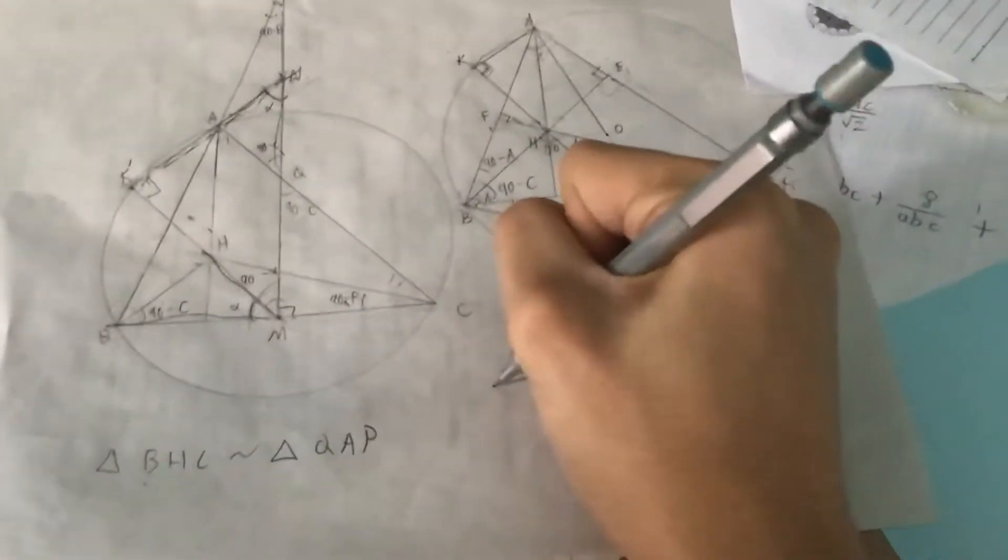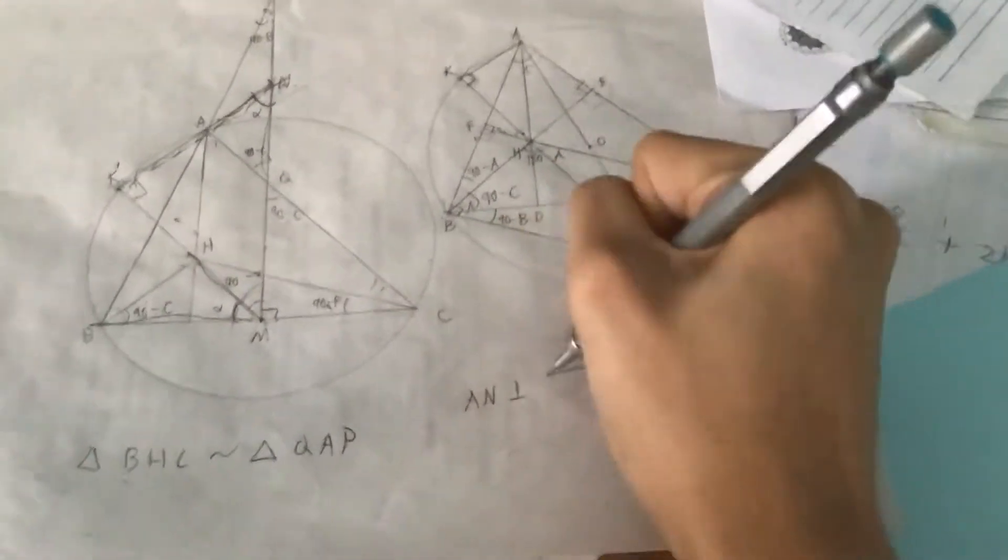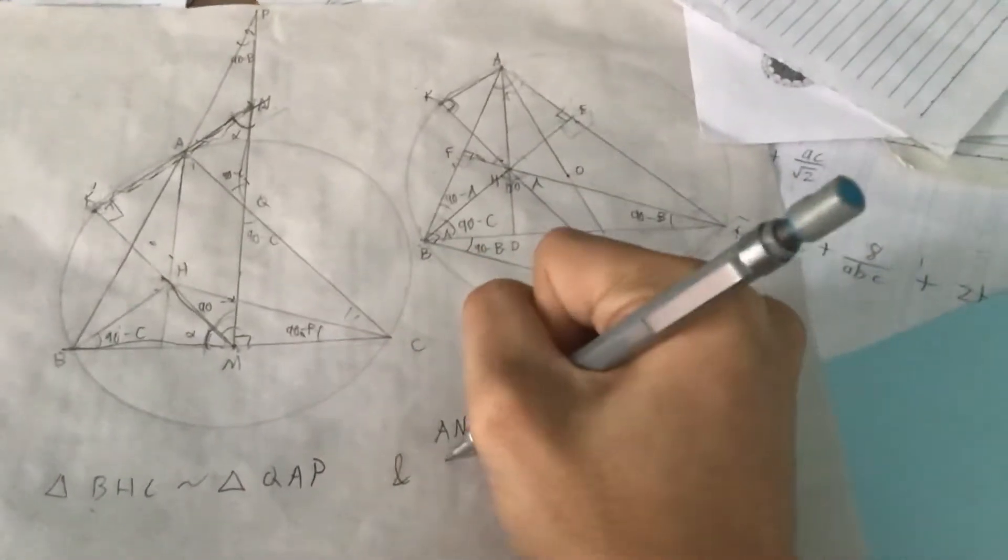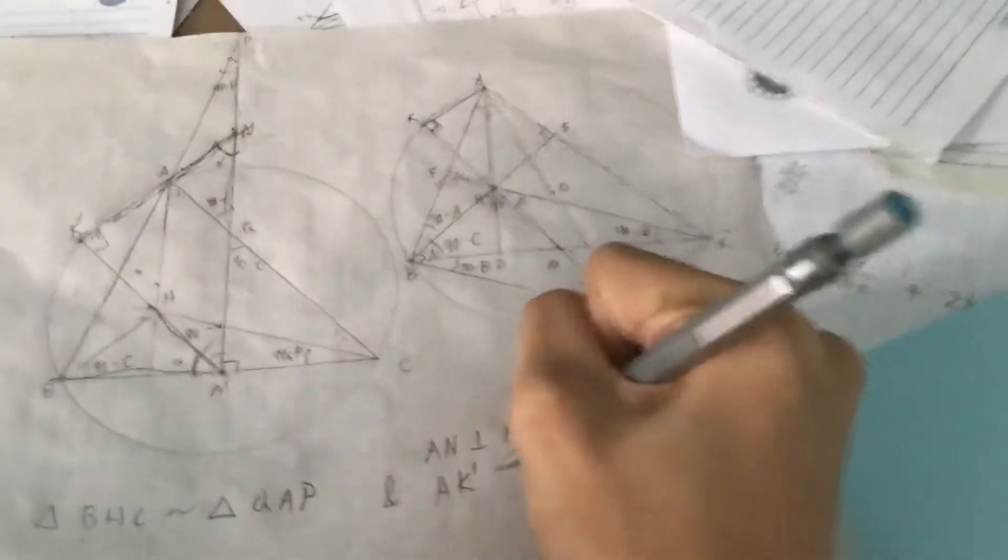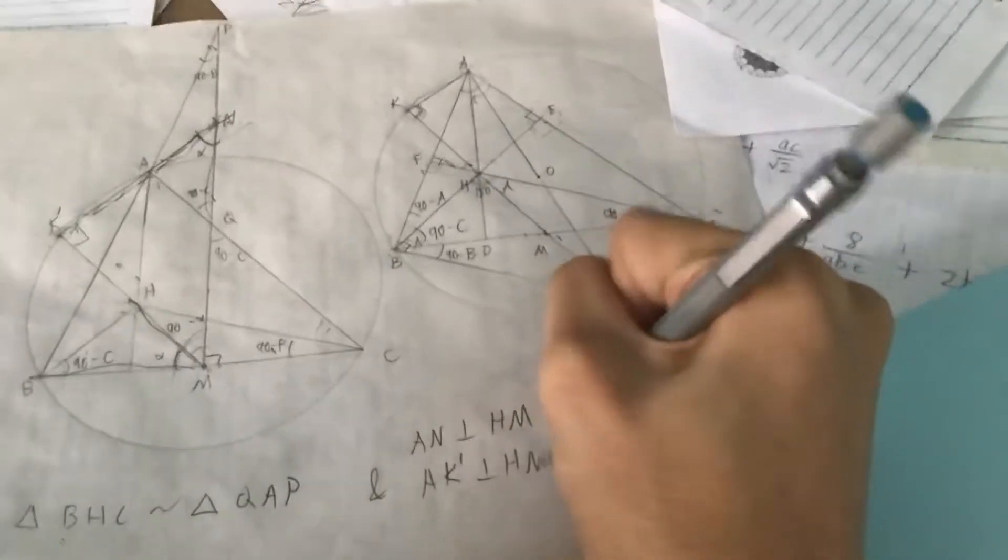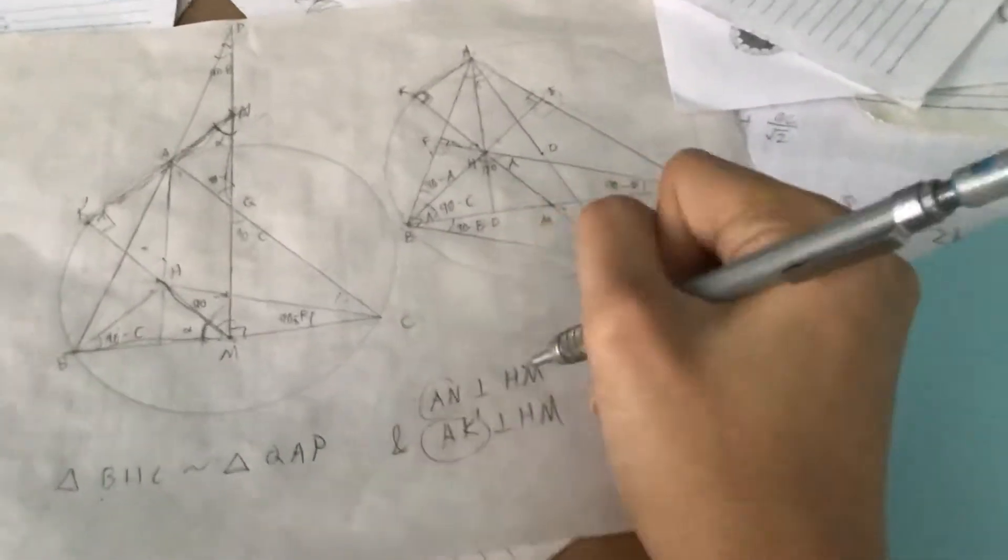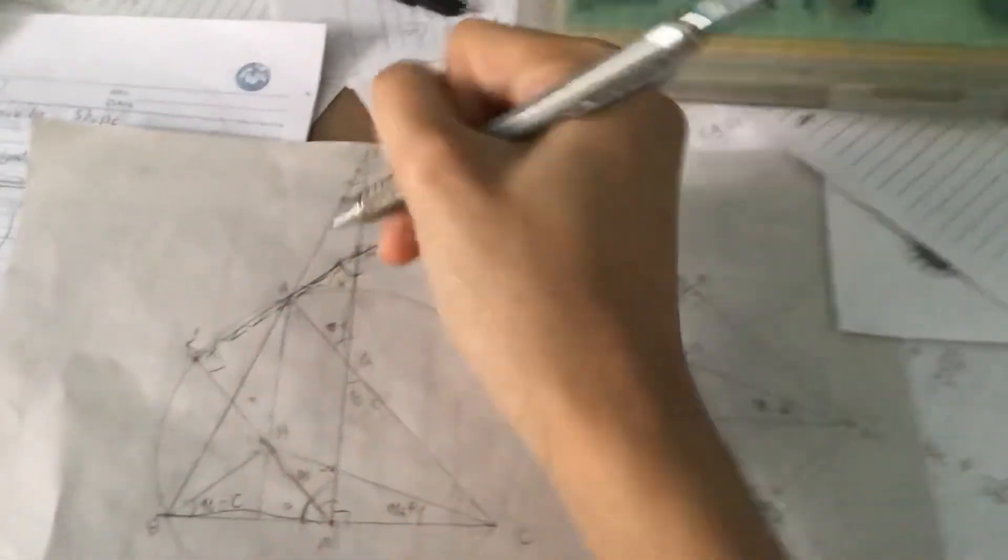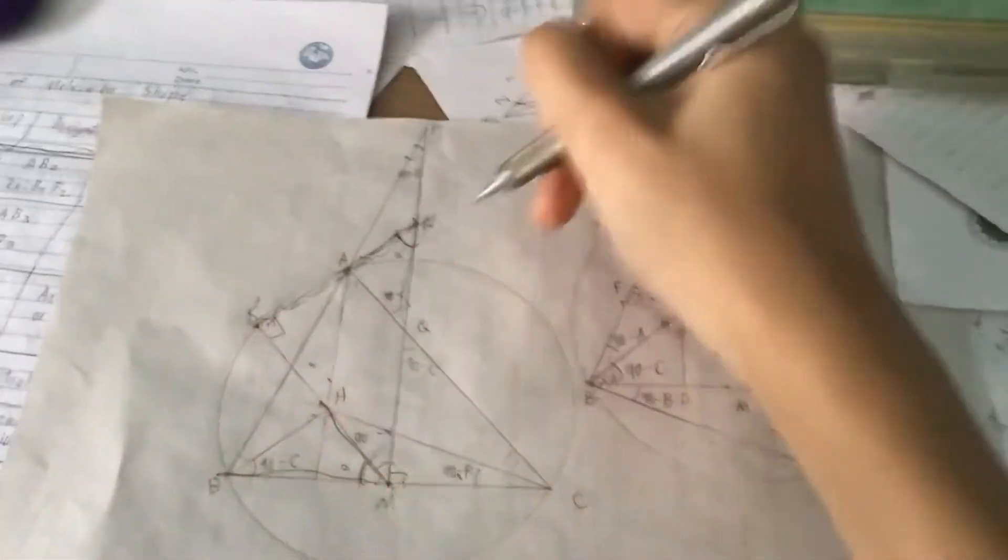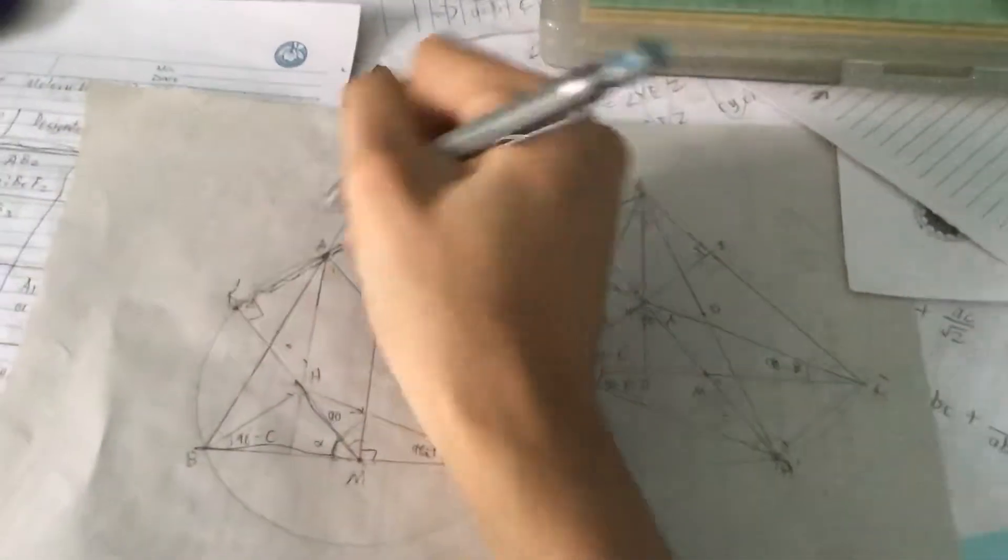And now since AN is perpendicular to HM, and AK prime is perpendicular to HM, they have to be the same line. Because they're both the lines, they both lie on the line through A perpendicular to HM. Hence we get that these three are collinear. So therefore...